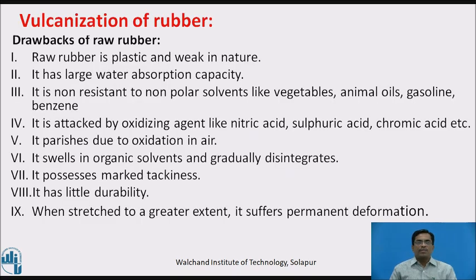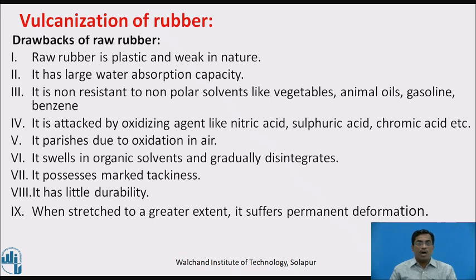Vulcanization of rubber. First, let us discuss the drawbacks of raw rubber. Raw rubber is plastic and weak in nature, has large water absorption capacity, and is non-resistant to non-polar solvents like vegetable and animal oils, gasoline, and benzene. It gets attacked by oxidizing agents like nitric acid, sulfuric acid, and chromic acid. It perishes due to oxidation in air, swells in organic solvents and gradually disintegrates, possesses marked tackiness, has little durability, and when stretched to a greater extent, suffers permanent deformation.